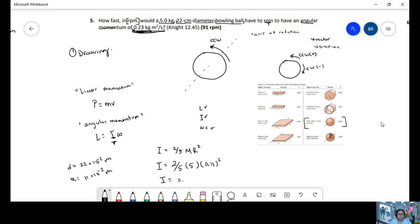Moment of inertia is 0.0245 kilogram meter squared.